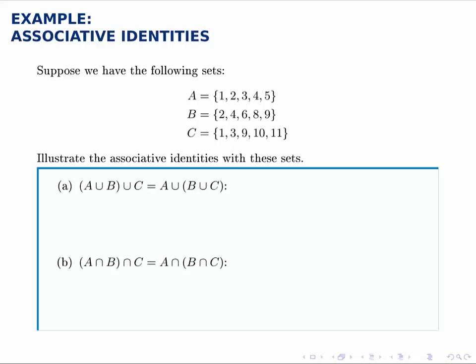In this example we're given three sets A, B, and C and asked to illustrate the associative identities with these sets.